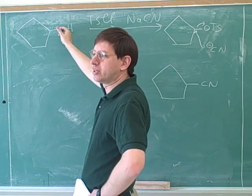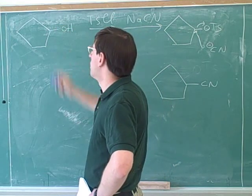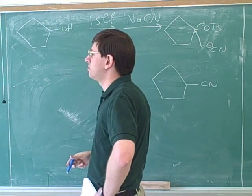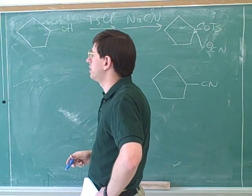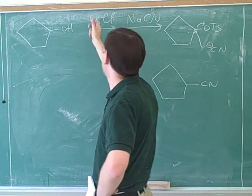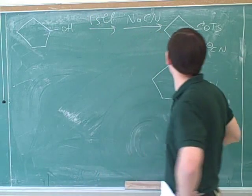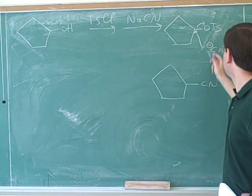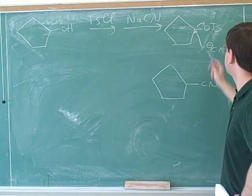The purpose of this reaction is to make alcohols into better leaving groups. Alcohols are not initially good leaving groups. You already remembered that another way to make an alcohol a good leaving group is an acid, but this is an alternative way to make the alcohol a good leaving group, and then we can do our SN2 reaction.